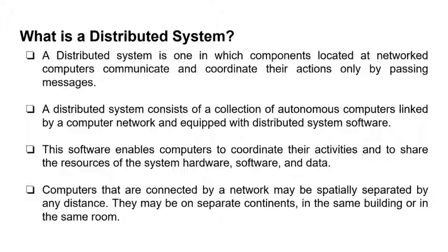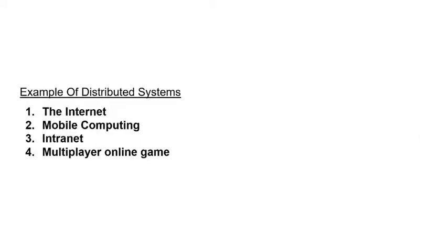A distributed system is one in which components located at networked computers communicate and coordinate their actions only by passing messages. Examples of distributed systems include the internet, mobile computing, intranet, and multiplayer online games. Whenever we are using one or more devices, connecting them, and performing a particular task together, we can say it is an example of a distributed system.